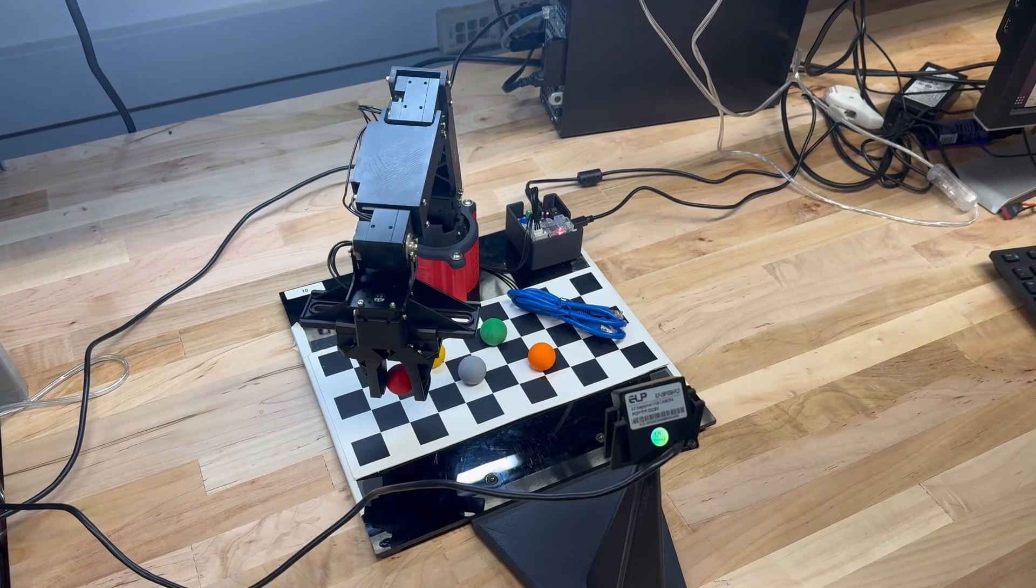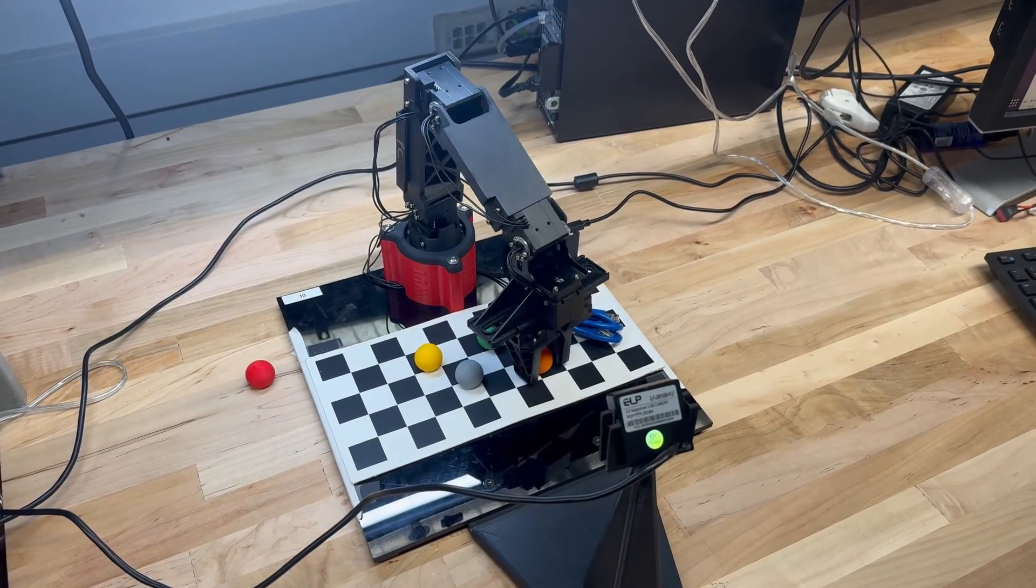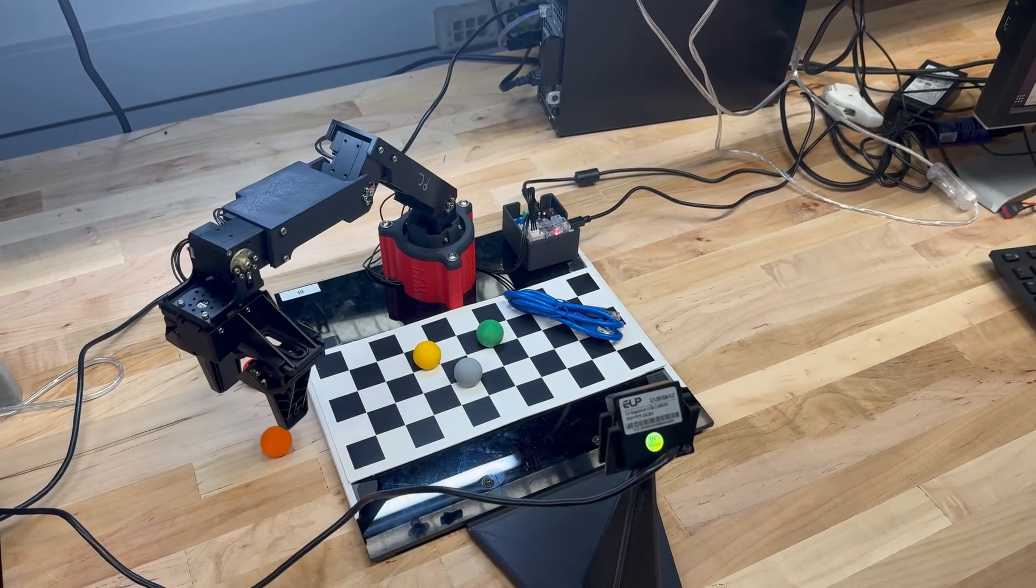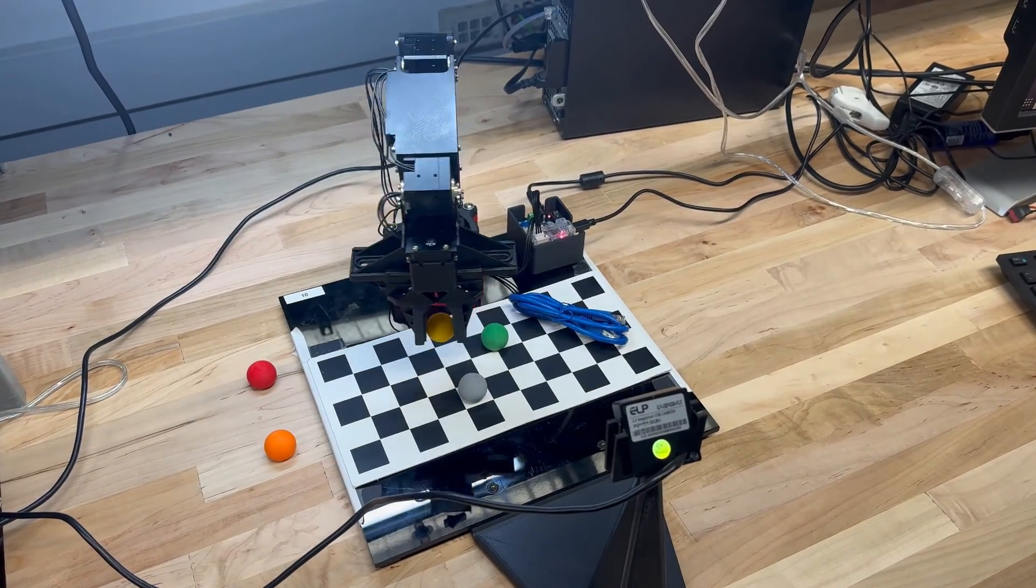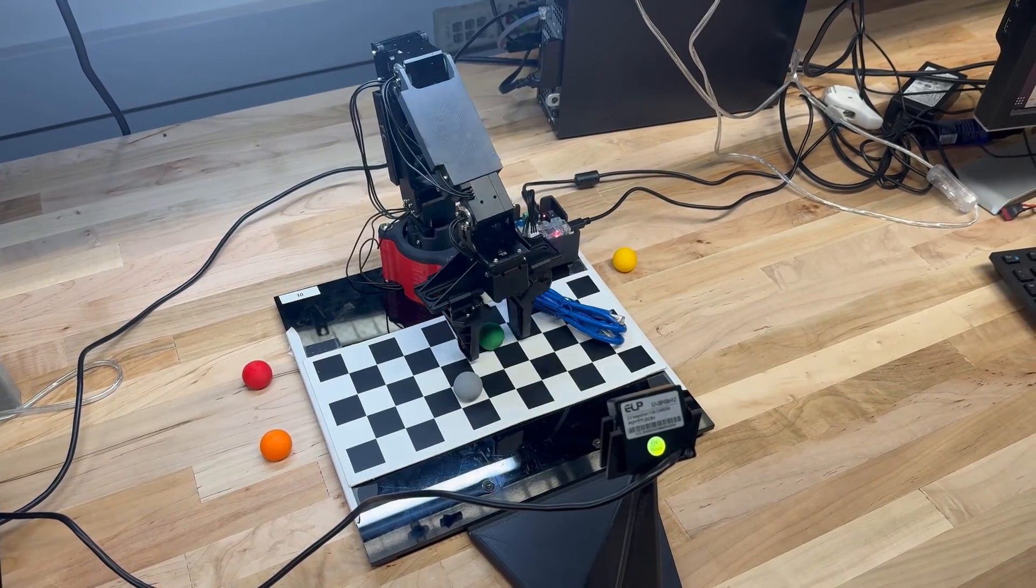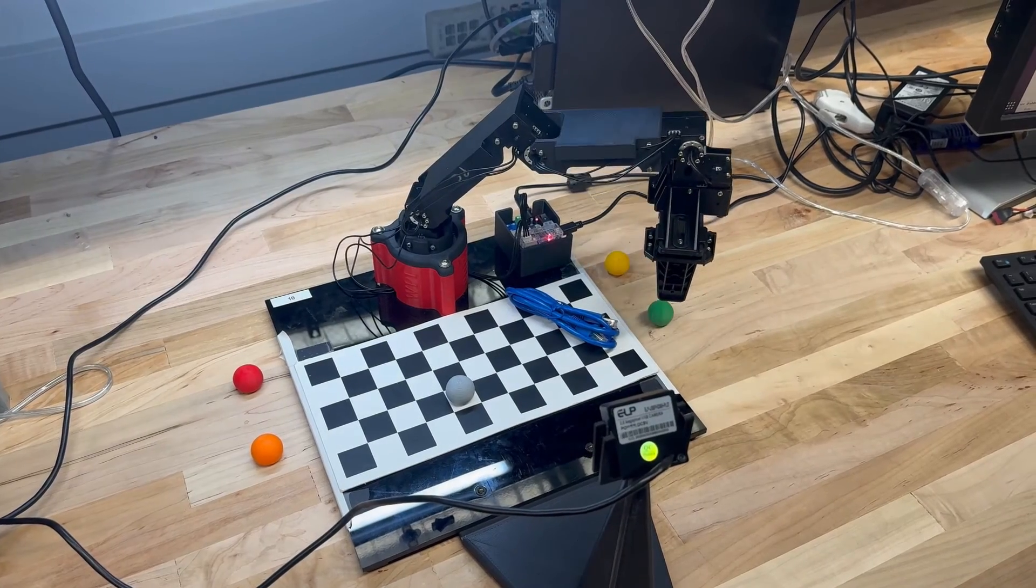We put everything together by taking the outputs of the centroid of the colored balls and using inverse kinematics to go to their locations, pick up the balls, and place them in designated locations based on their colors. There you have it, a rudimentary pick and place robot that can sort colored balls.